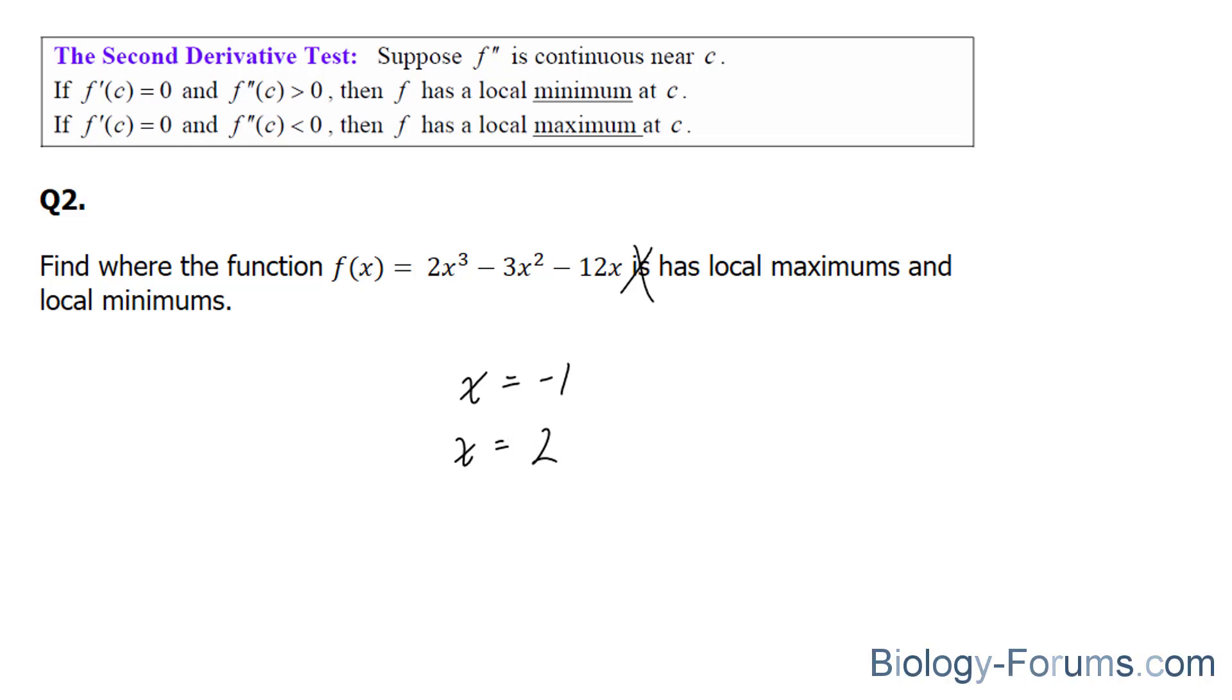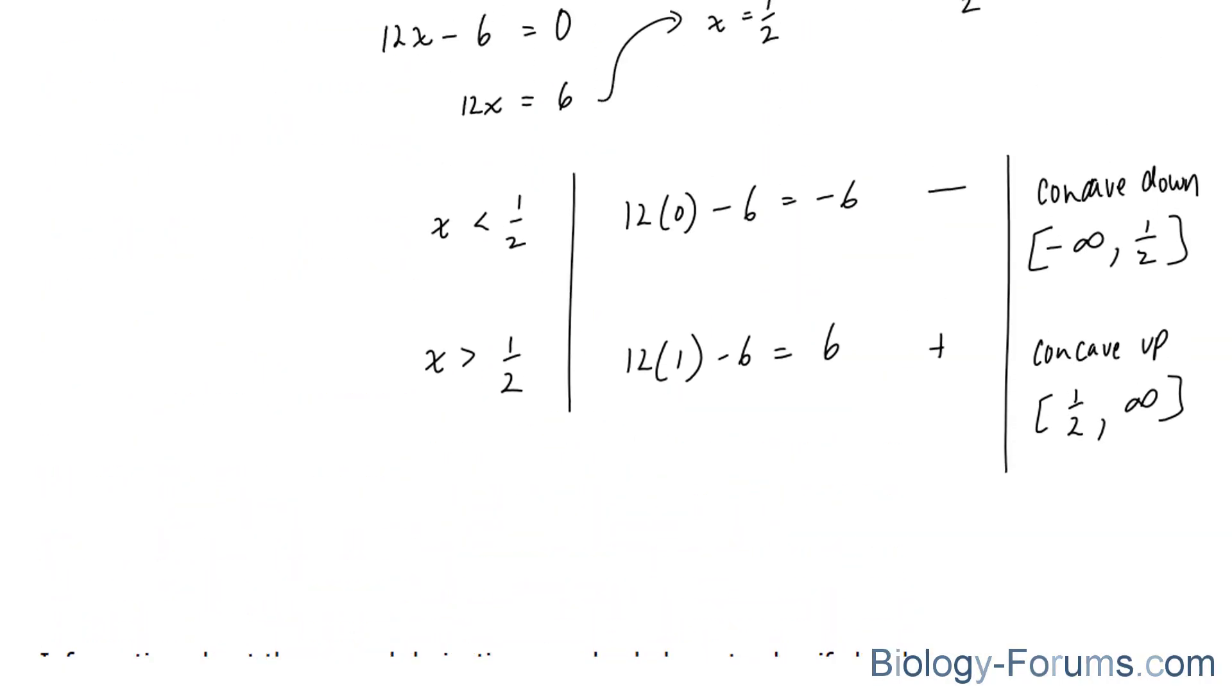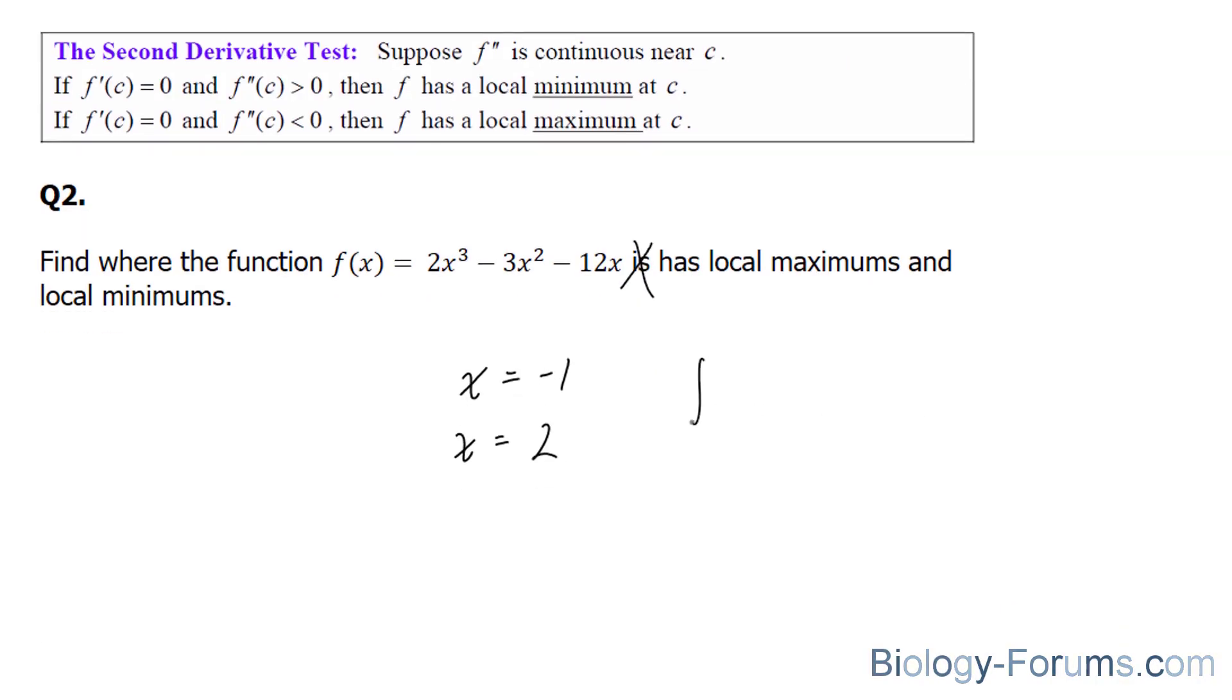And you can check part 1 to see how I derived these. And above, we learned that the second derivative was equal to 12x minus 6. So f double prime equals 12x minus 6. And what we're going to do is evaluate this function at these two points.